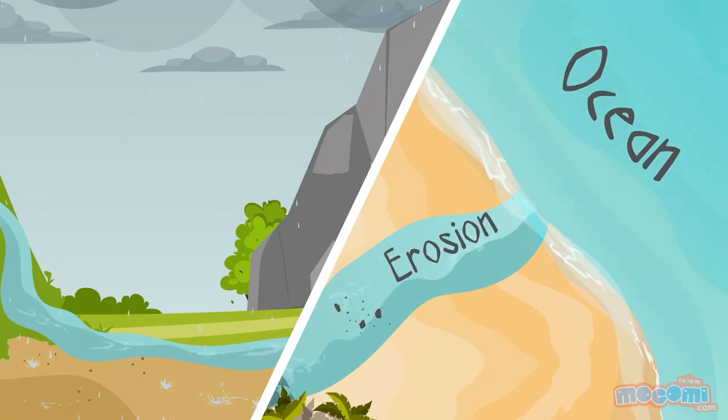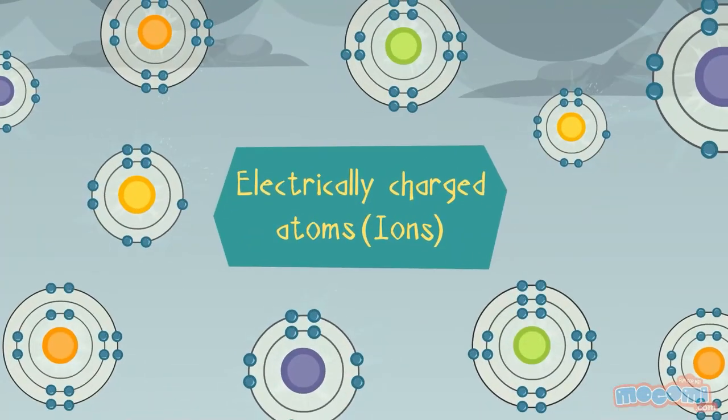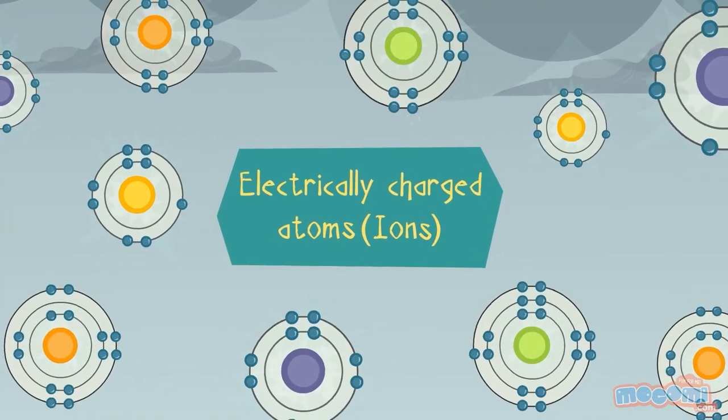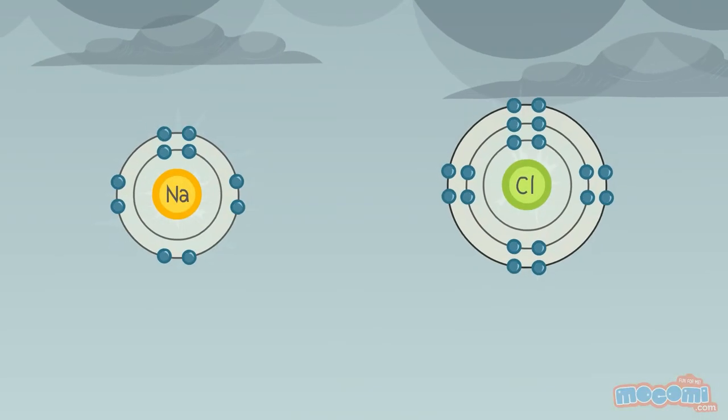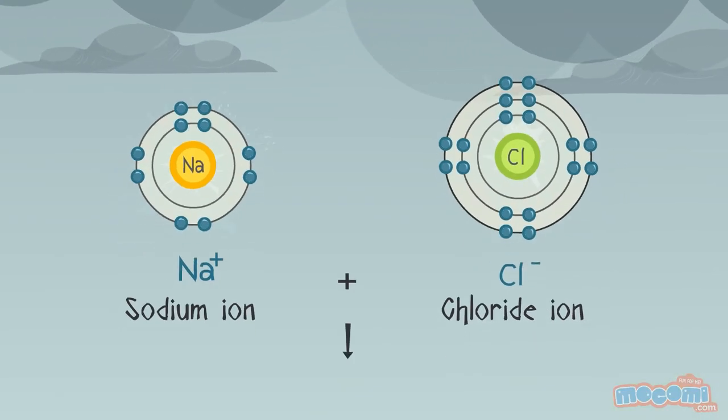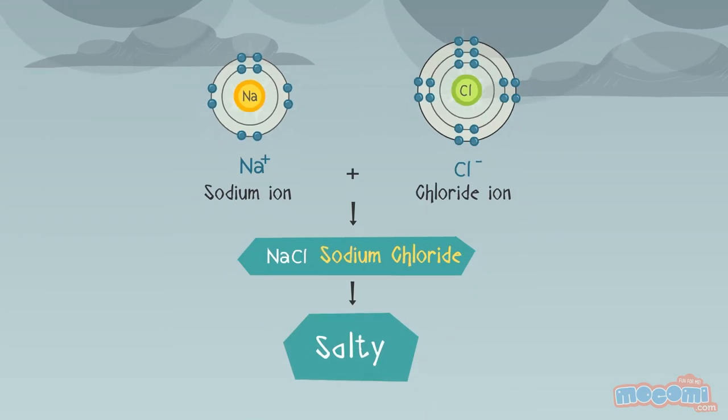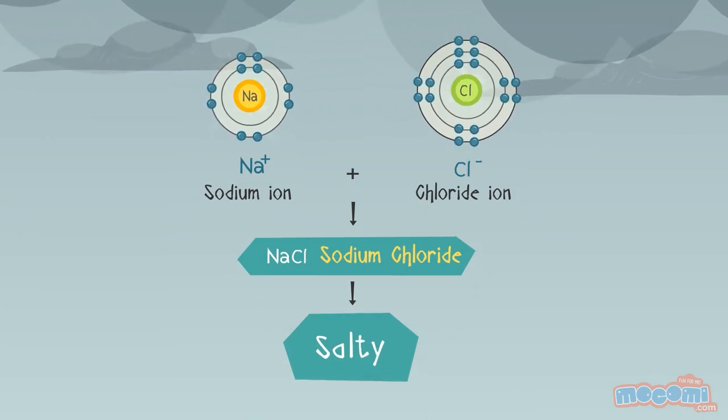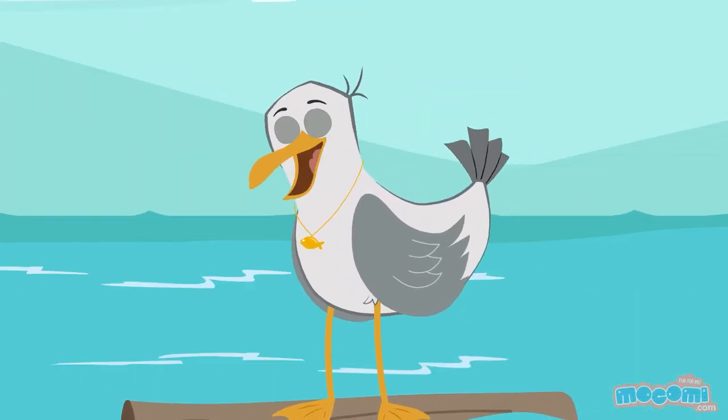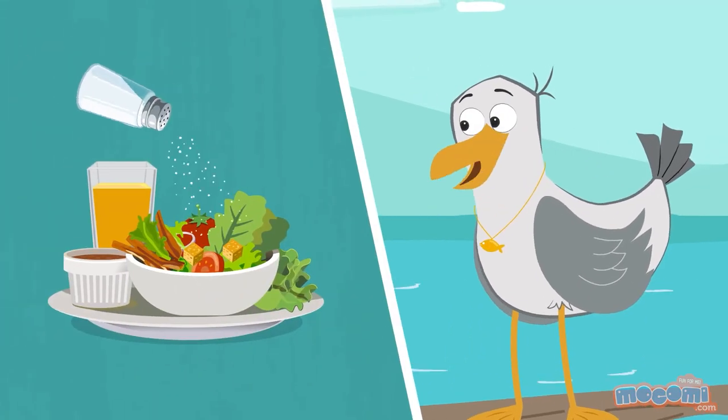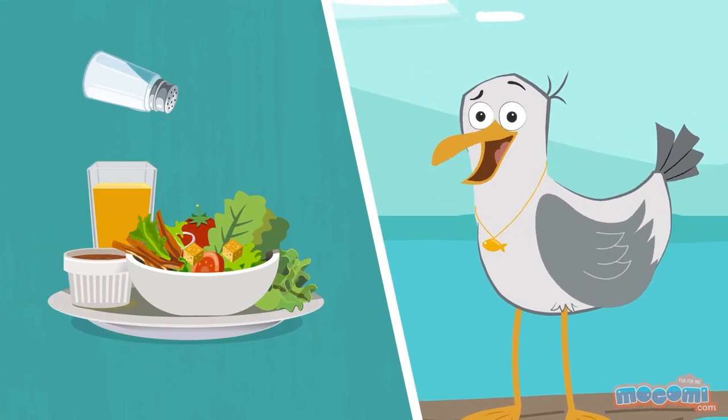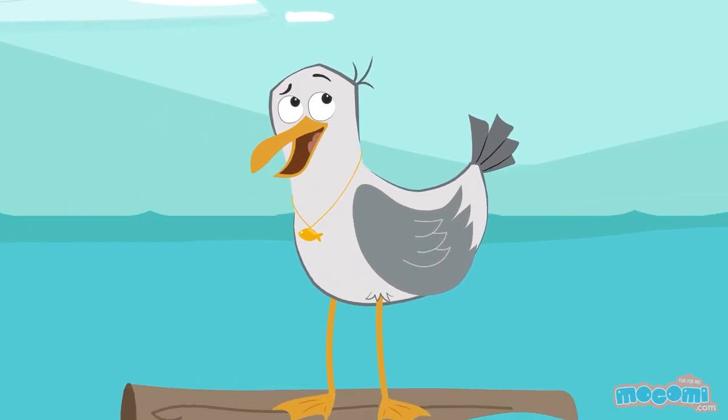This process creates electrically charged atoms, also known as ions. The two main ions created are chloride and sodium, and these are salty. Oh, I know sodium! It's in the salt we eat! But how does all this rain water end up in our oceans and seas?